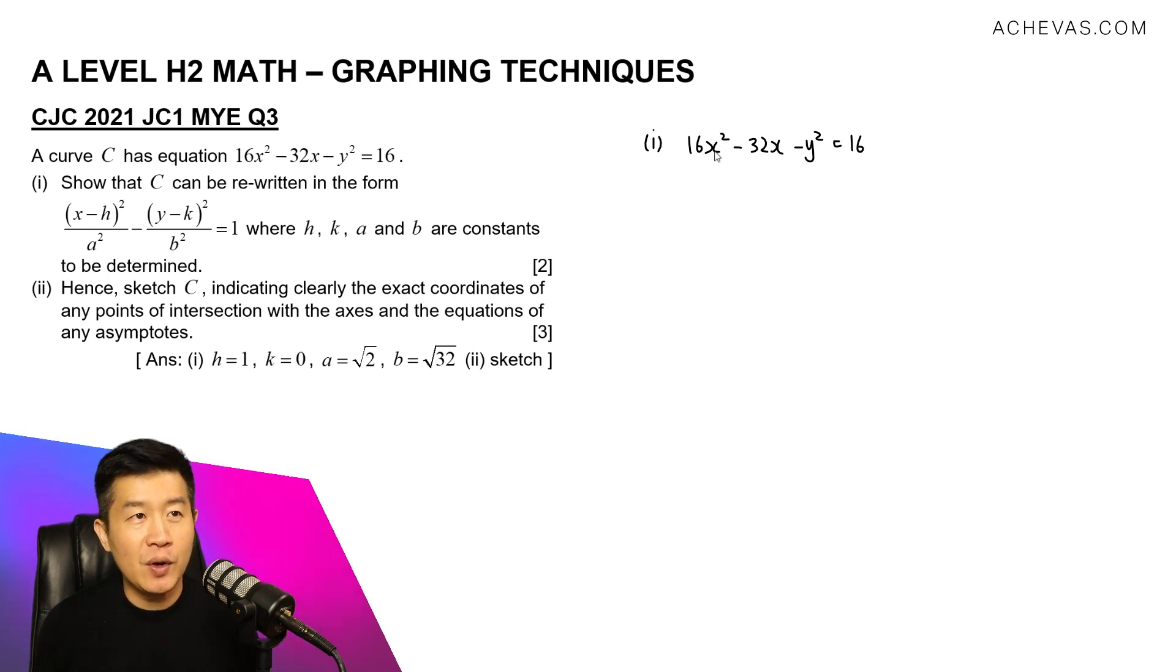For completing square for an expression like this, we need to first make sure that the coefficient of x² is positive 1. So let's factorize out 16. So now you immediately give me a positive 1x² - 2x - y² = 16.